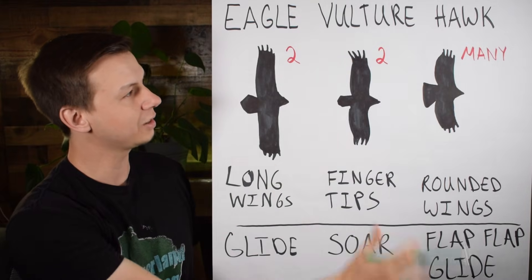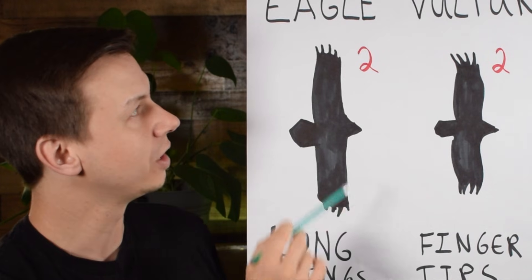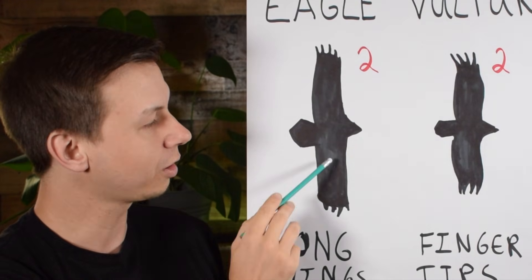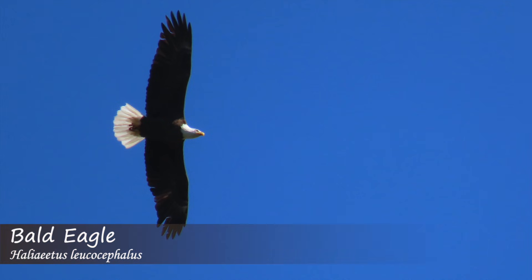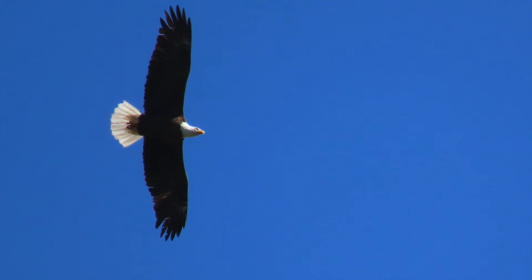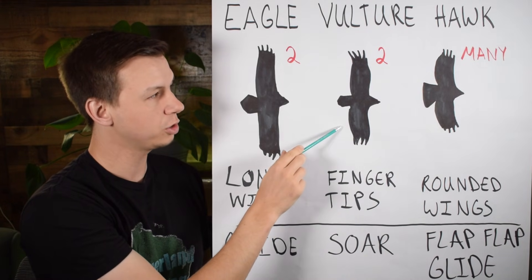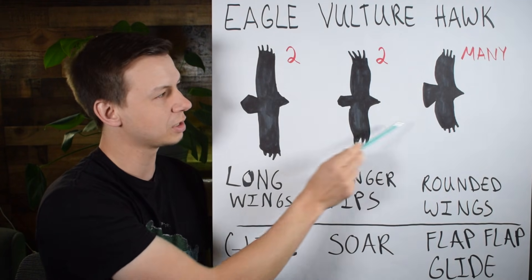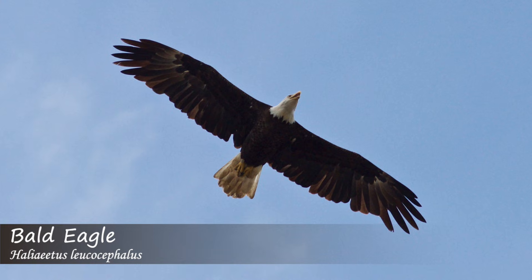When looking at these birds together, one of the first things you want to think about is size. The eagle is going to be the largest out of any of these three, and they're going to look like they have really, really long wings. So if you're seeing a bird with exceptionally long wings, it's probably an eagle. The vulture is also going to be relatively large, and hawks vary in size — medium to large — so they can look similar in size to a vulture. The eagle is going to dwarf these two species.